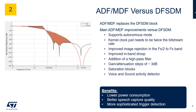Refer to the figure on the left. The cascaded integrator comb, or CIC, filter implemented in ADF and MDF also improves in-band group delay. A high-pass filter is added to remove low-frequency noise from the input signal. The gain or attenuation can be adjusted with an accuracy of 3 dB. ADF and MDF also feature saturation blocks which prevent wraparound of the binary code when the code exceeds its maximum or minimum value. Finally, ADF supports a voice and sound activity detector.